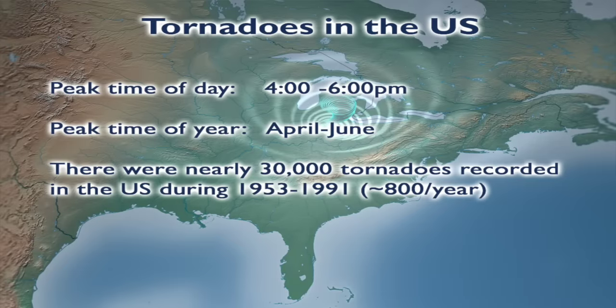There were nearly 30,000 tornadoes reported in the United States in a 40-year period between the 1950s and the 1990s. That's a lot of tornadoes happening, nearly 800 a year, just in this one country alone. The United States has the most tornadoes of any other country in the world.